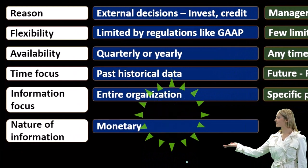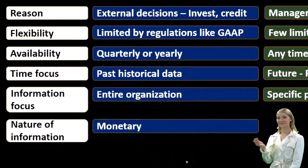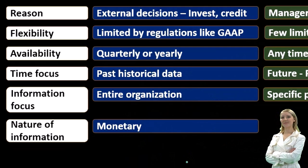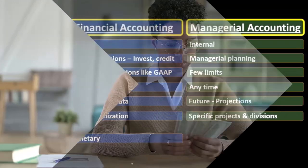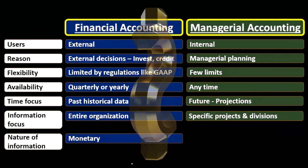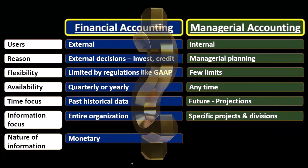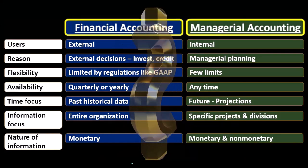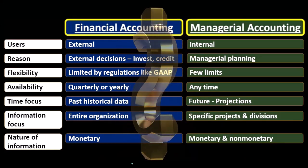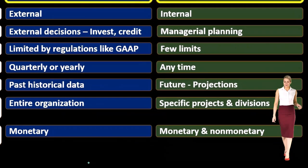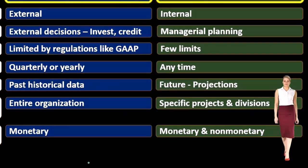Nature of information: financial accounting is going to be purely monetary. The balance sheet is going to have things like equipment on it — a forklift or something — but when we put it on the financial statement, we report it in terms of dollars. Everything is reported in terms of dollars. That same information will be used in managerial accounting, but it's not the only type of information. We recognize that's only one set of information. If we can put numbers to something, we typically will, because that makes things easier to compare and contrast.